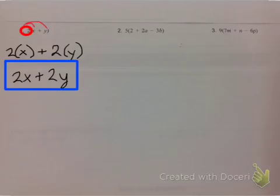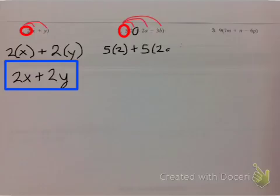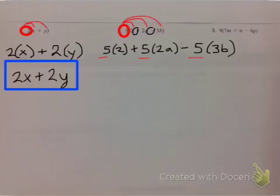Sometimes you're going to have 3 terms inside your parentheses. You need to distribute that 5 to every single term. So we are going to have 5 times 2 plus 5 times 2a minus 5 times 3b. So we distributed that 5 to every single term, then we simplify: 5 times 2 is 10, 5 times 2a is 10a, minus 5 times 3b is 15b.